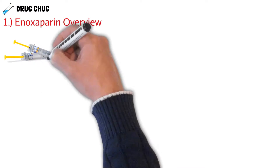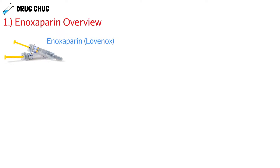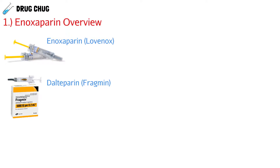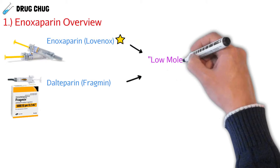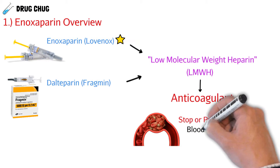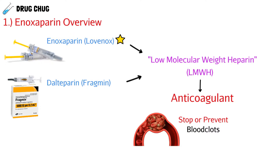So what exactly is enoxaparin? Enoxaparin is also known as Lovenox. Another drug worth mentioning is daltaparin, brand named Fragmin — both drugs do the same thing. Enoxaparin is more common; you will see it more often in hospitals. Both are considered low molecular weight heparin, abbreviated LMWH, and what this does is prevent blood clots — so these are anticoagulants.